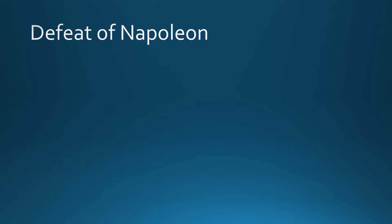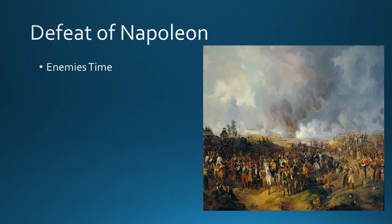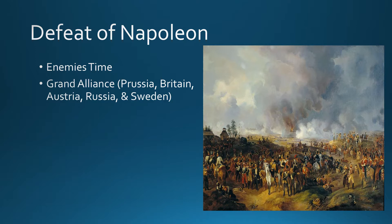Now it's time to look at the defeat of Napoleon. With all the momentum against Napoleon, his enemies say enough is enough — it's time to take over. We see what's known as the Grand Alliance: Prussia, Britain, Austria, Russia, and Sweden coming together. Napoleon loses the Battle of Leipzig, and this is the change — Napoleon is losing battles he hadn't lost before. Napoleon's empire is crumbling completely.